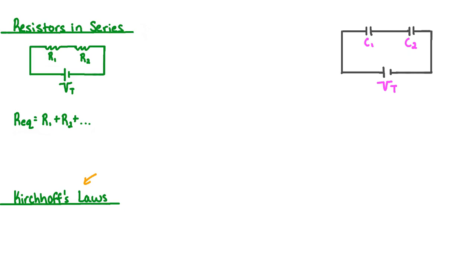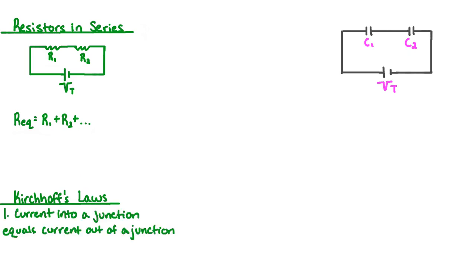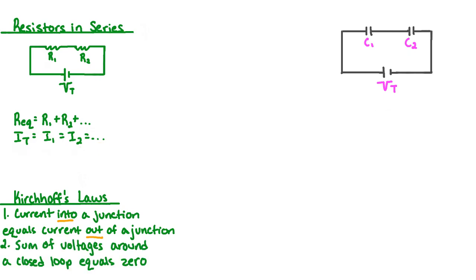Once again, we apply Kirchhoff's laws. With respect to Kirchhoff's first law, the current into a junction equals the current out of a junction. In a series circuit, the current doesn't split because there is no junction. This means that the total current is equal to the current through the first resistor, I1, is equal to the current through the second resistor, I2, and so on. In the second law, the sum of voltages around a closed loop equals zero. In a series circuit, all the resistors are on the same closed loop. This means that the potential difference of the battery, V total, is equal to V1 plus V2, and so on.